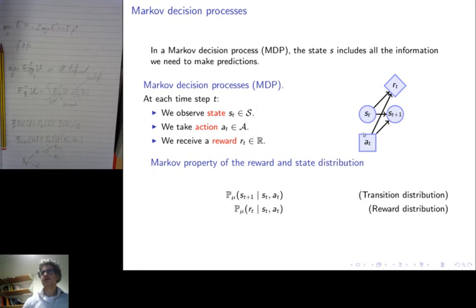And the reward depends on the state and the action. So that way we have a transition distribution where the next state depends on the current state and action, and the reward distribution where the current reward depends on the current state and action.